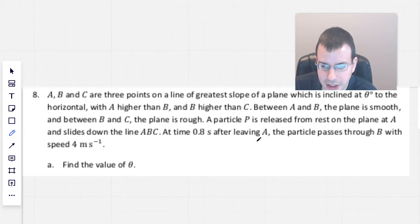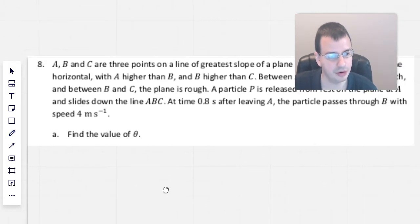A particle P is released from rest on the plane at A and slides down. Slides as opposed to rolls - if it rolls it would have to take into account rotational energy. It slides down the line from A to B to C. At time 0.8 seconds after leaving A, the particle passes through B with a speed of 4 meters per second. Find the value of theta.